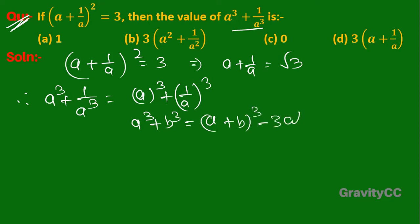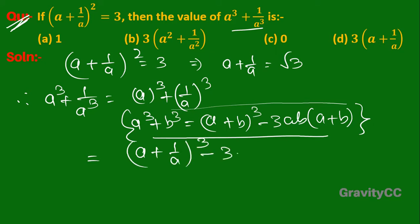So equal to (a + 1/a)³ minus 3 times a times 1/a times (a + 1/a). Here a cancels, so (√3)³ minus 3 times √3.